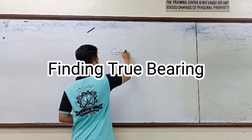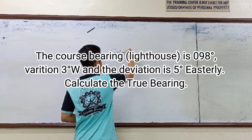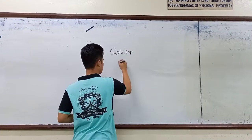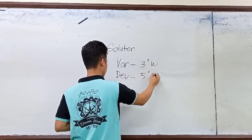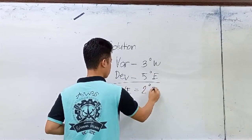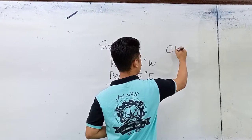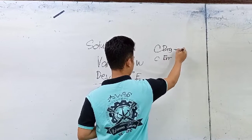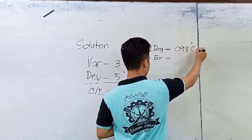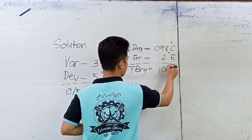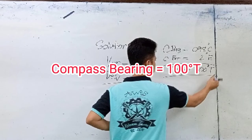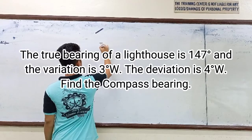The course bearing of a lighthouse is 98 degrees, the variation is 3 degrees west, and the deviation is 5 degrees east. Calculate the true bearing. Simply subtract these two to get the compass error of 2 degrees east. With a compass bearing of 098 degrees and a compass error of 2 degrees east, we get a true bearing of 100 degrees true.